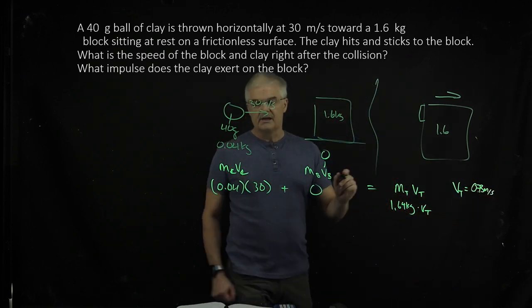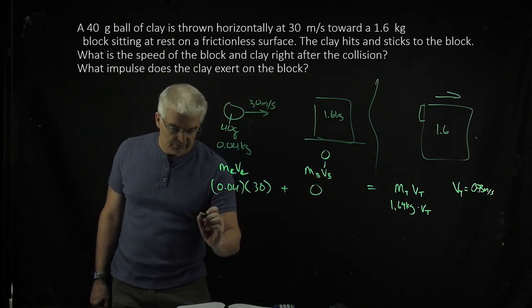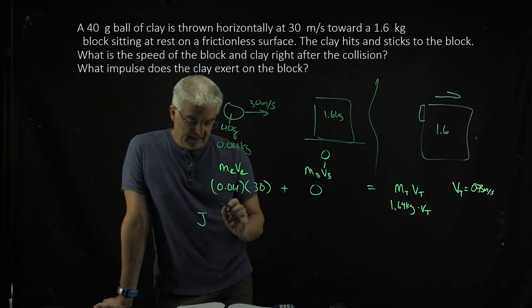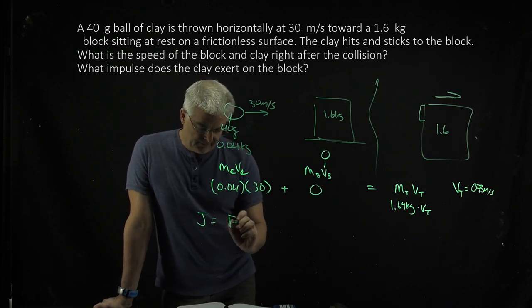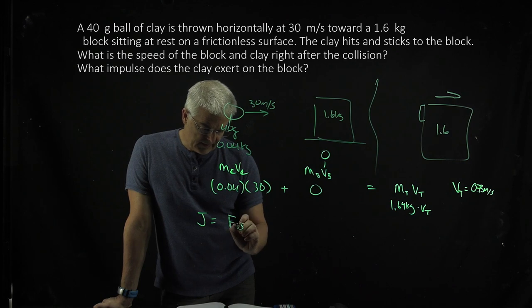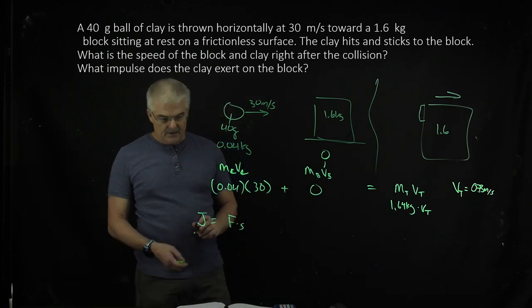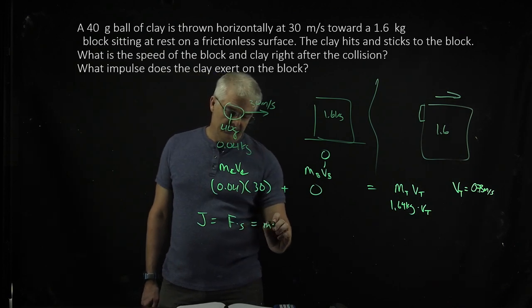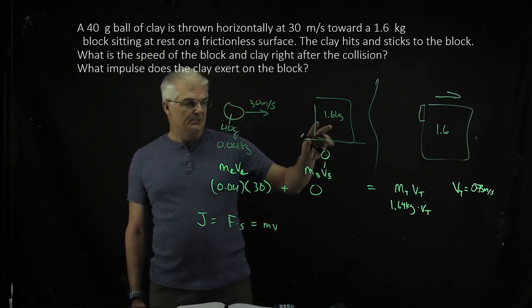The second question, though, is the impulse question. If you recall, impulse is the letter J. I know that's weird. And that's equal to F times seconds. But impulse is also equal to MV. So what impulse is being part of this?